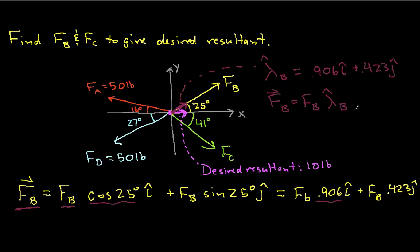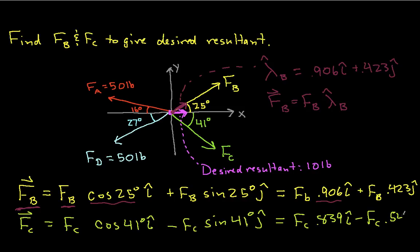Okay. So, again, that's a useful concept. Unit vectors are very handy in three dimensions where looking at things geometrically becomes more difficult. Okay, so Fc, we can write this quickly as this is Fc cosine 41 degrees minus Fc sine 41 degrees and this gives us Fc times 0.839 i hat minus Fc 0.545 j hat. Okay, so we've expressed Fb and Fc in terms of their x and y components.